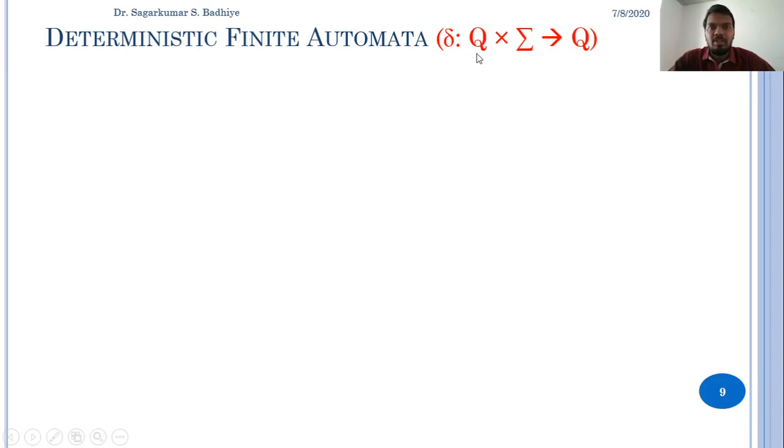This means that whenever your finite automata is in a particular state q and gets a symbol from sigma, based on this combination your finite automata will always make a transition to a fixed state from q.